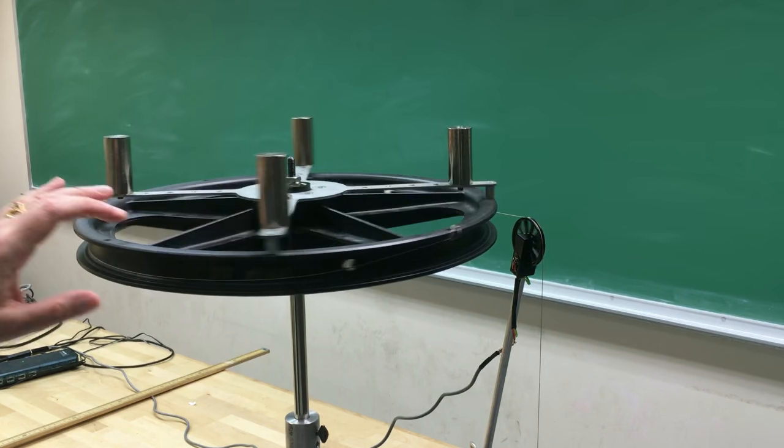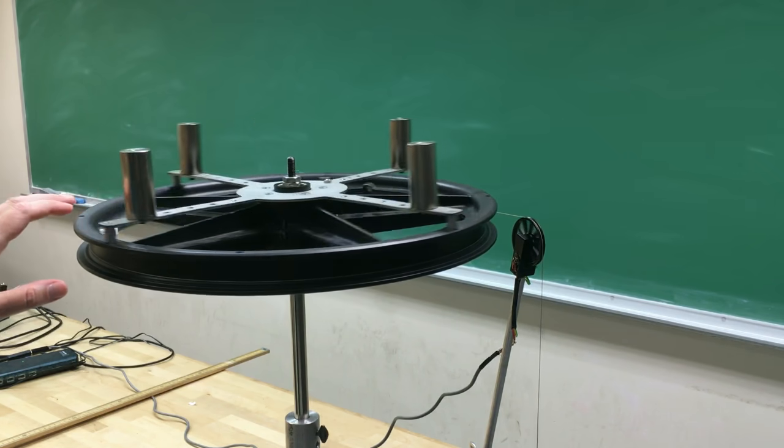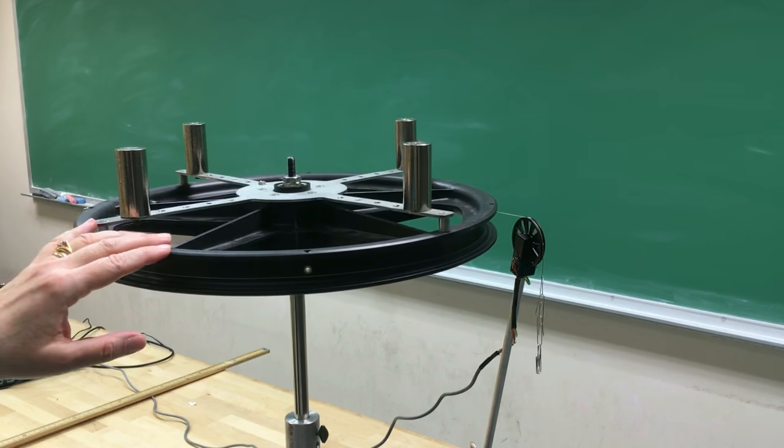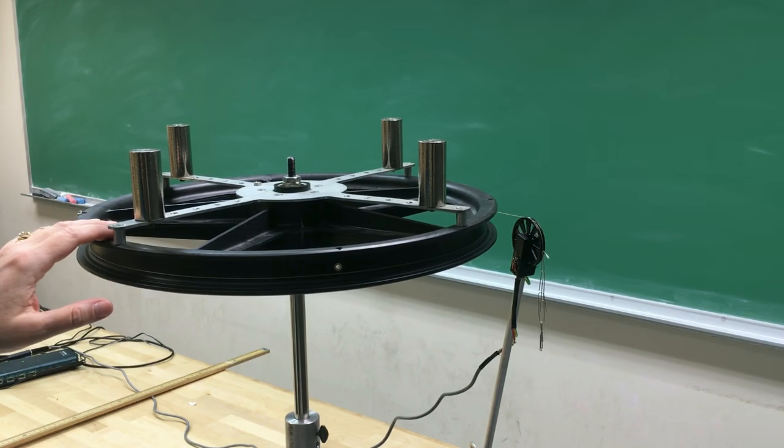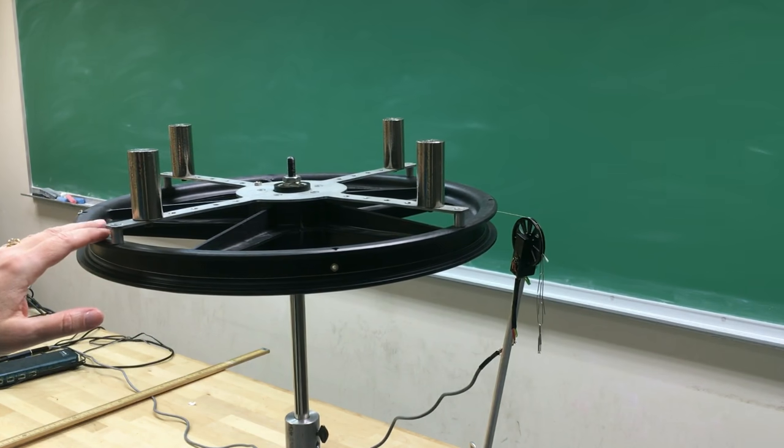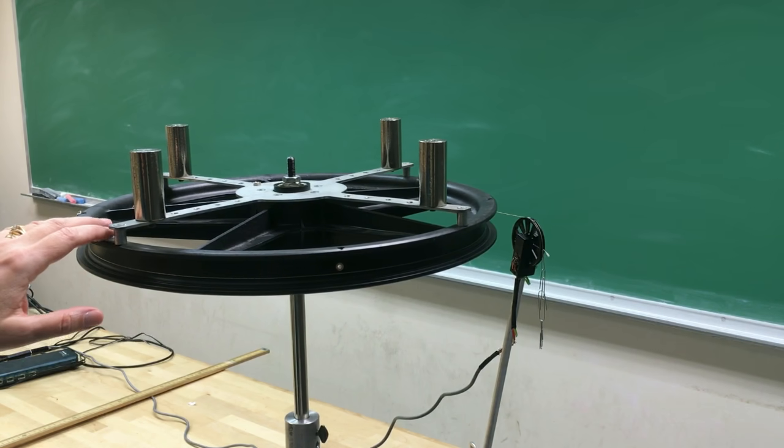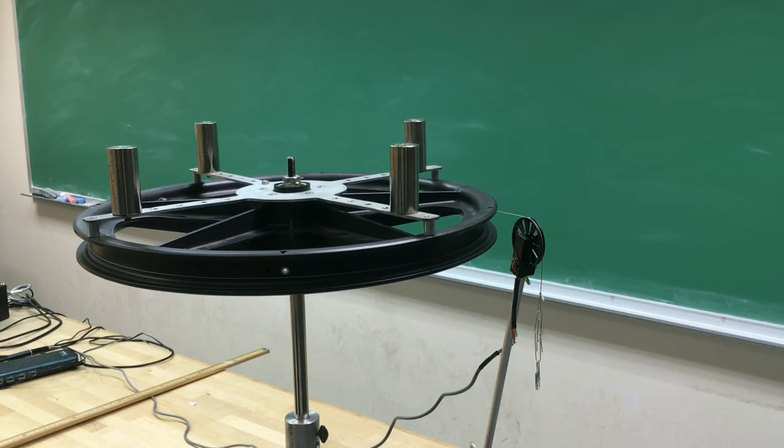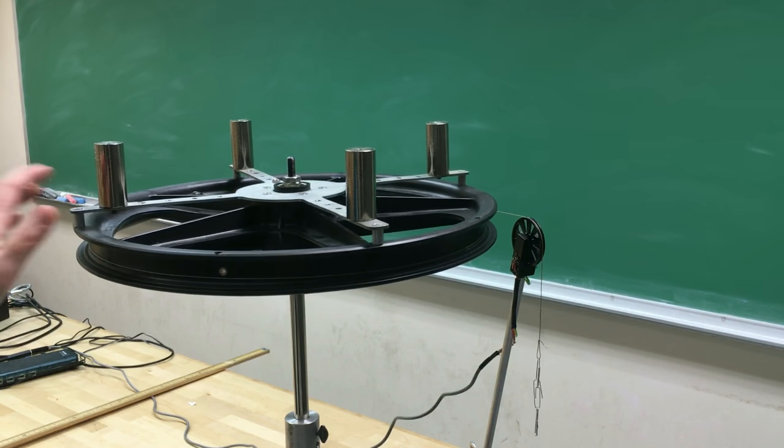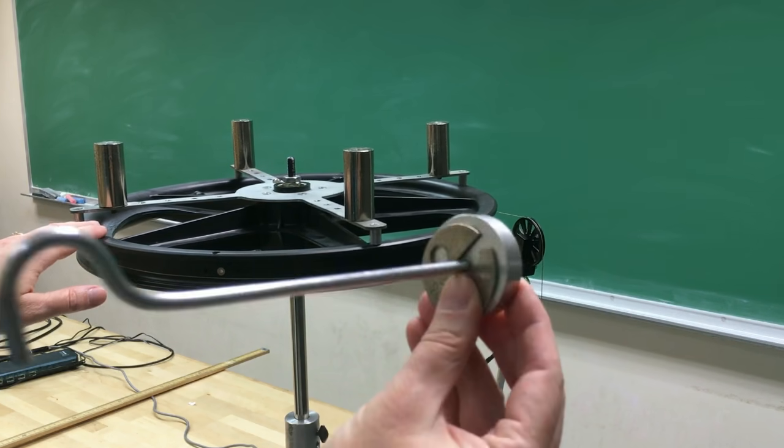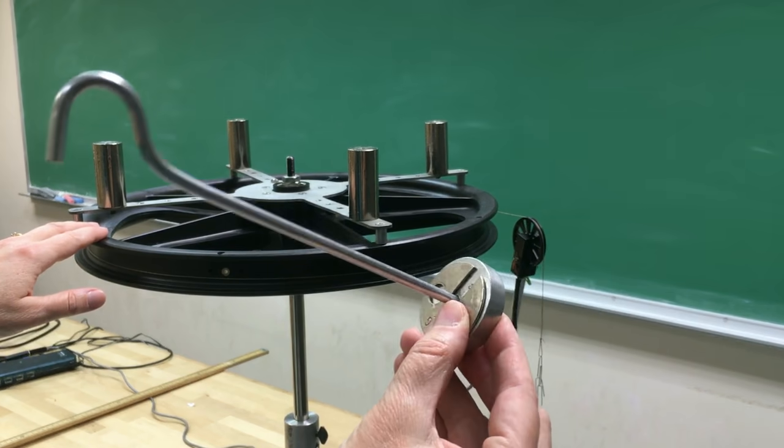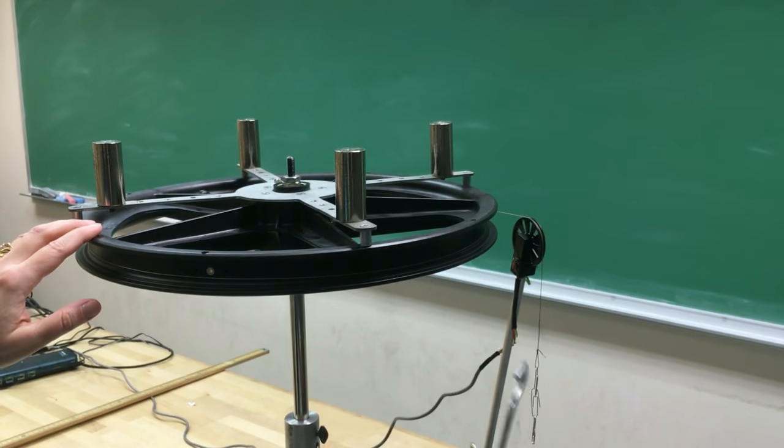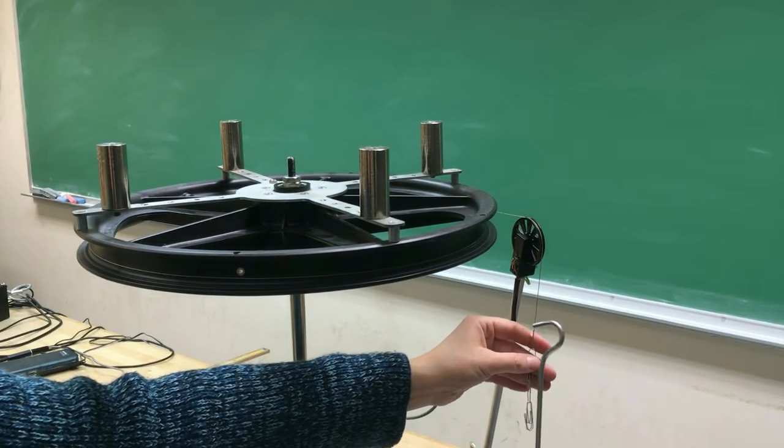After you do this measurement and are convinced that the speed is constant with enough paper clips added, you are asked to add 60 grams to the string. 60 grams is the mass weight plus the mass hanger.